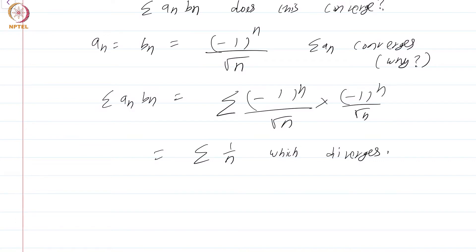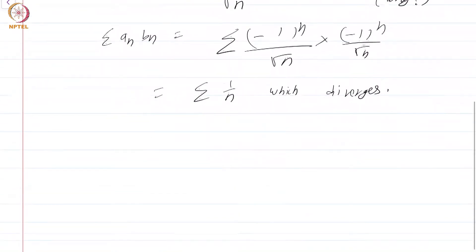So it is not always the case that if you take a series summation aₙ and another series summation bₙ and naively take the product summation aₙbₙ, that product need not converge.